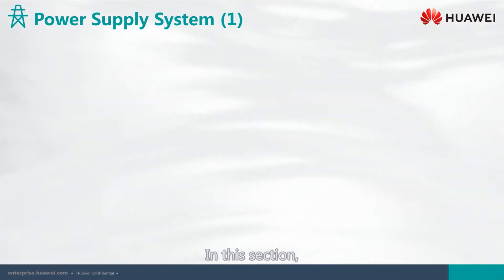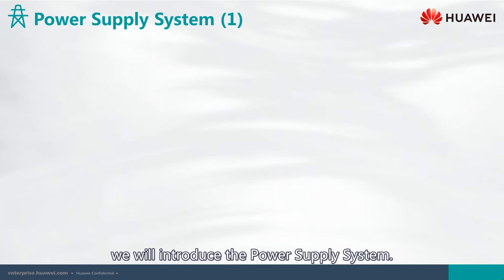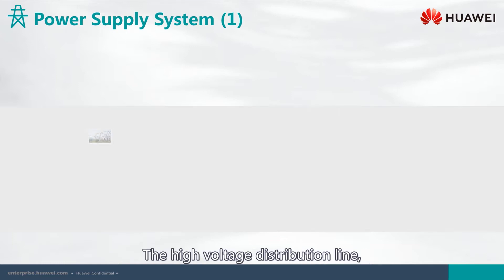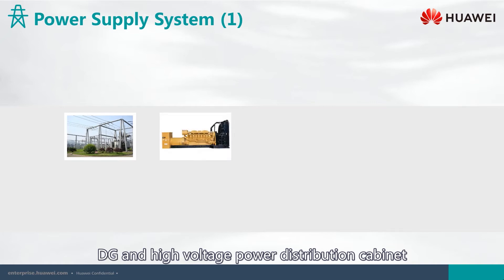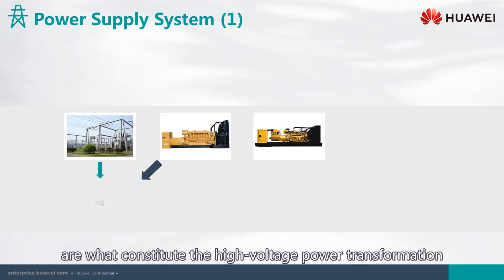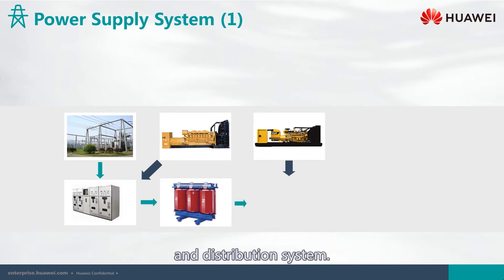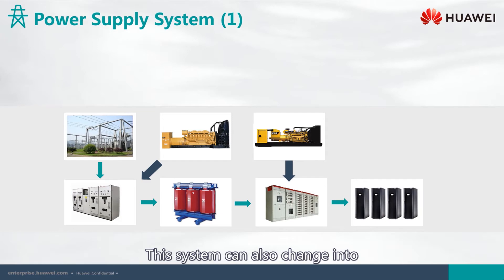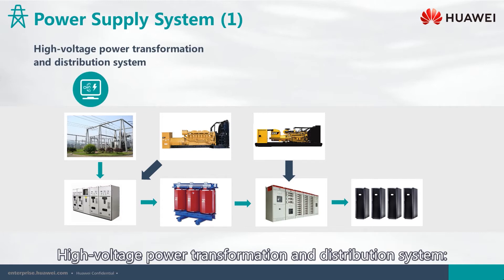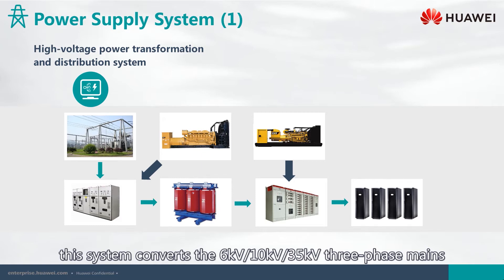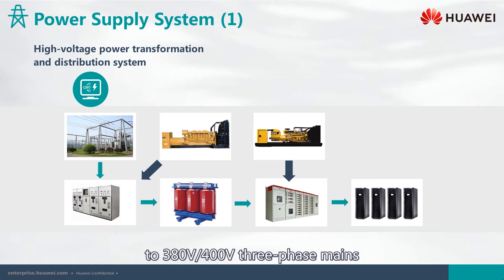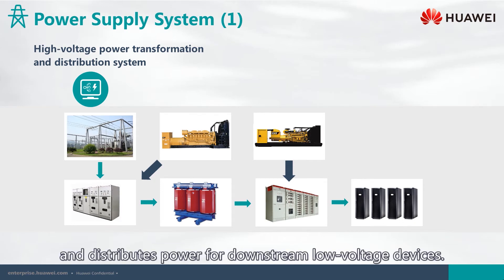In this section, we will introduce the power supply system. The high voltage distribution line, DG, and high voltage power distribution cabinet constitute the high voltage power transformation and distribution system. This system converts 6 kilovolt, 10 kilovolt, or 35 kilovolt three-phase mains to 380 volts or 400 volt three-phase mains and distributes power for downstream low voltage devices.